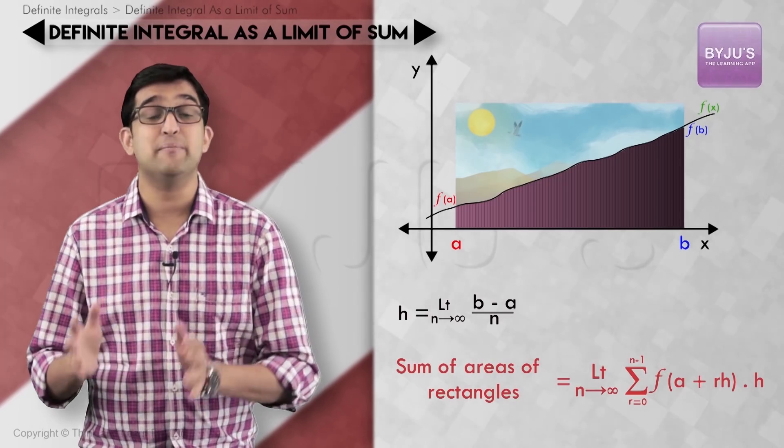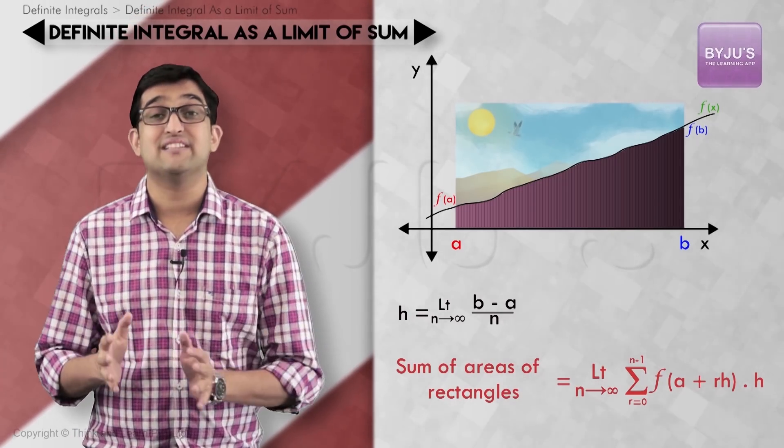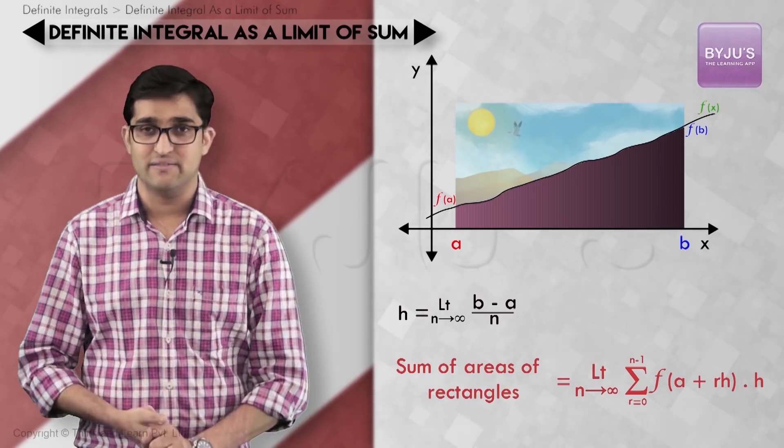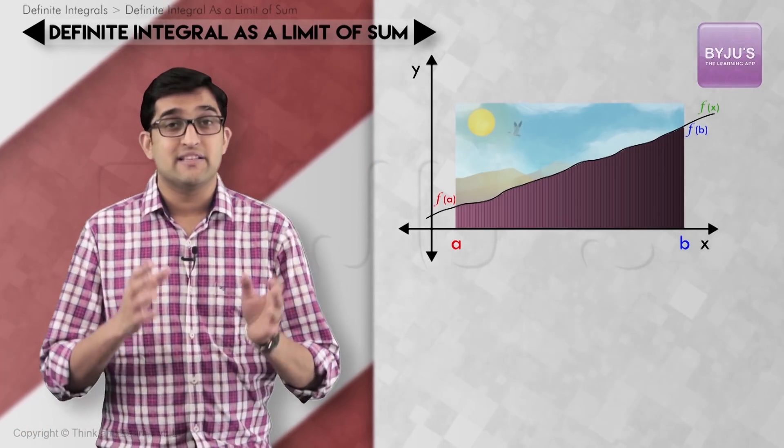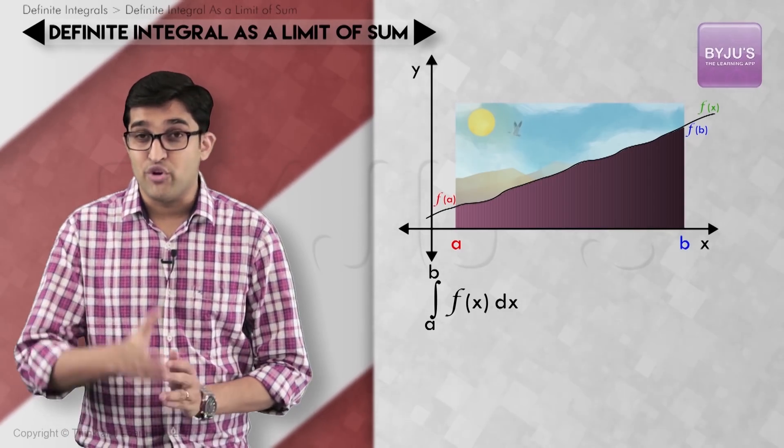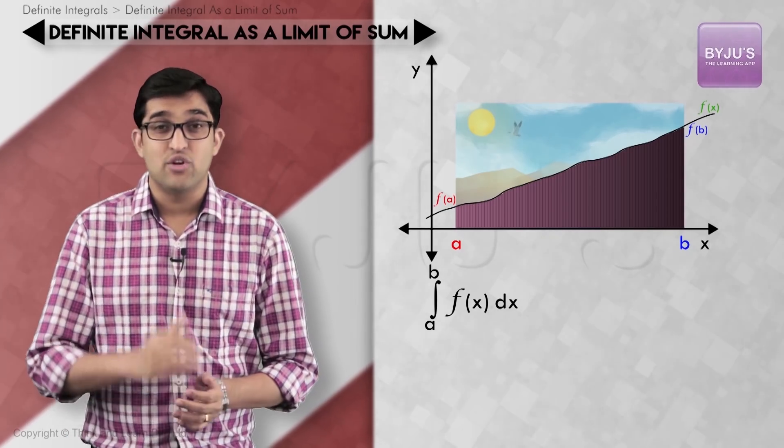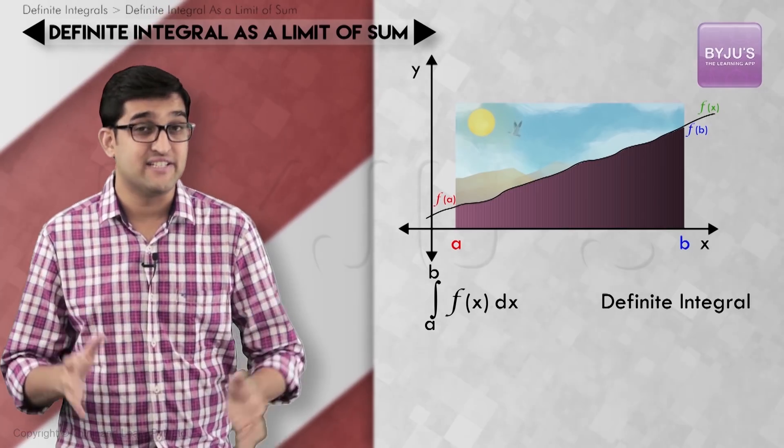An alternate expression for representing this area expression is what you can see on the screen now. This is known as a definite integral and is read as integral a to b, f(x) dx.